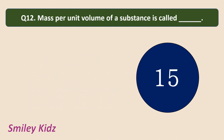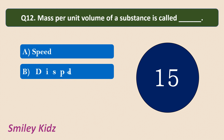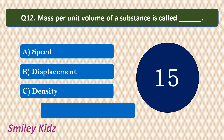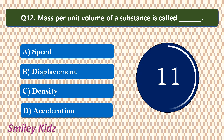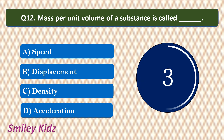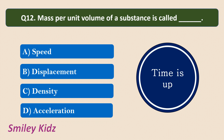Question number 12: Mass per unit volume of a substance is called — options are: Speed, Displacement, Density, Acceleration. Your time starts now. Your time is up. The correct answer is Density. Density is mass per unit volume.